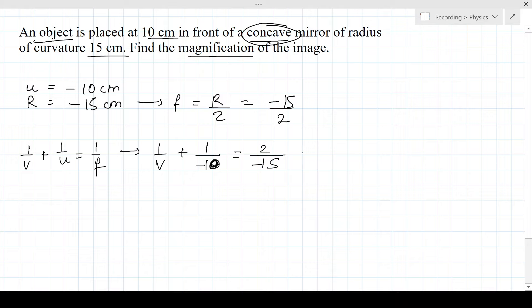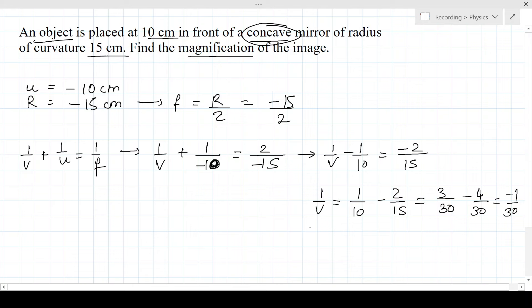So simplifying this, 1 by V minus 1 by 10 is equal to minus 2 by 15. That gives us 1 by V is equal to 3 by 30 minus 4 by 30, that is equal to minus 1 upon 30. That gives us V is equal to minus 30.